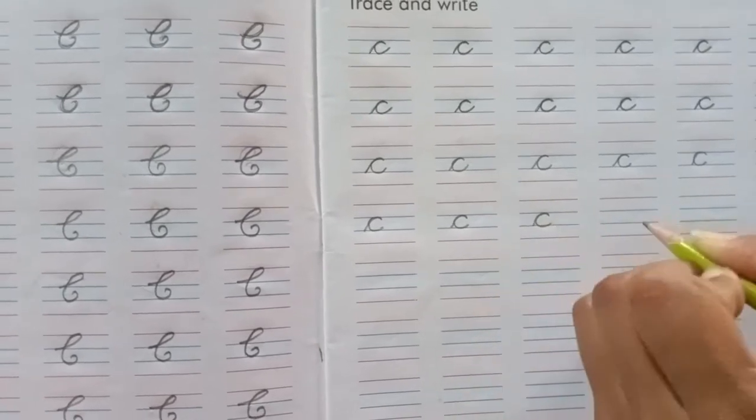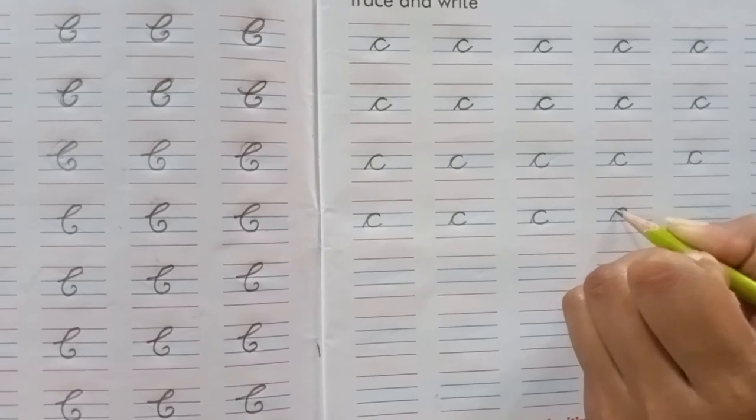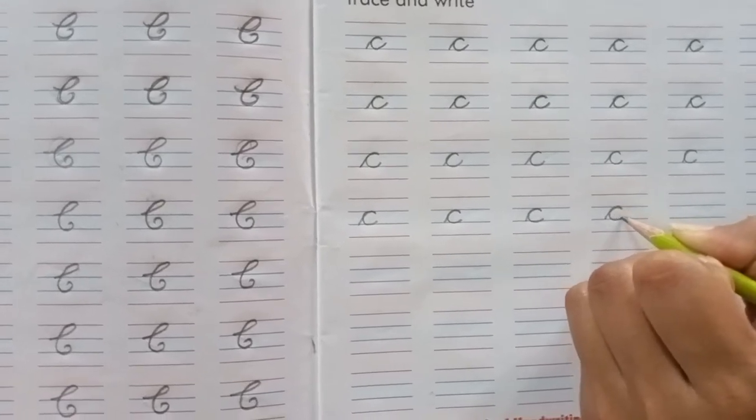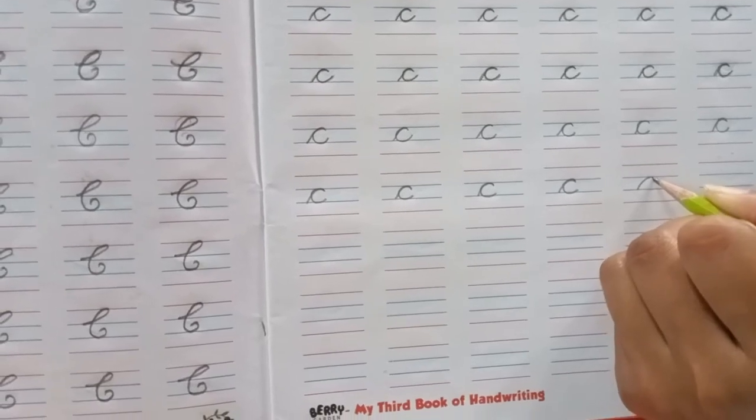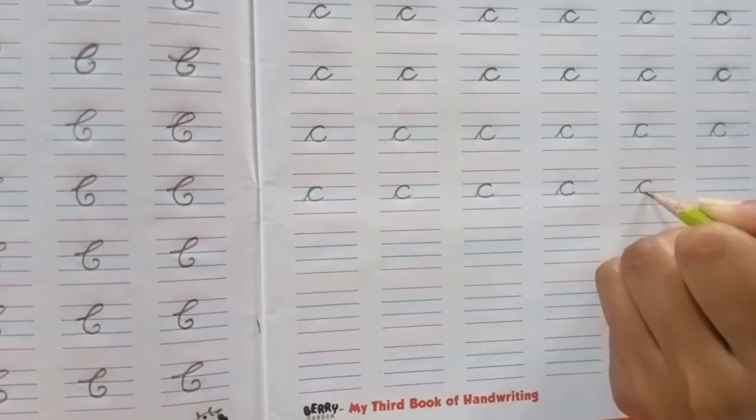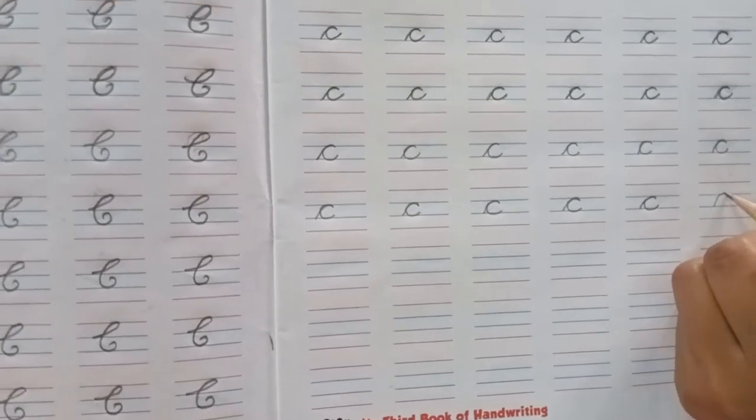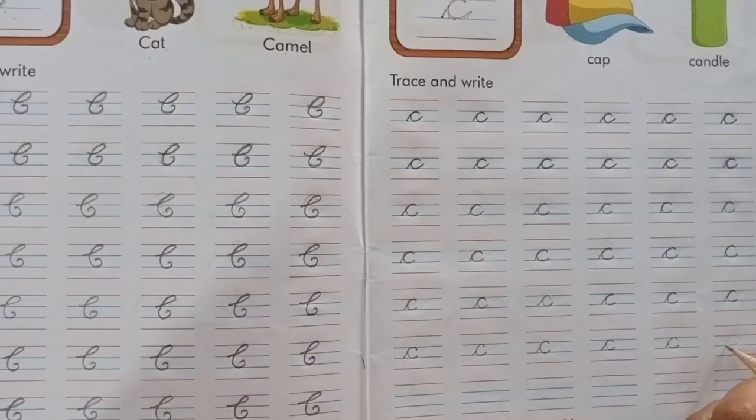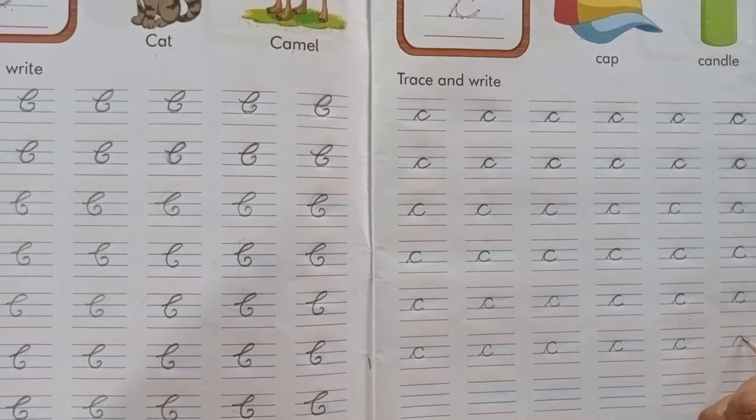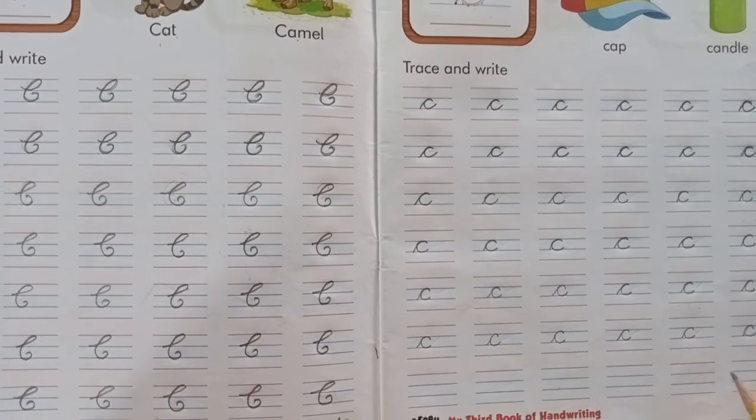Nice. Slowly, slowly you will write letter C. In the blue lines only. Okay. Slowly, slowly you have to write. Yes, my dear students. Very nice. Yes, students. Like this. Very good.